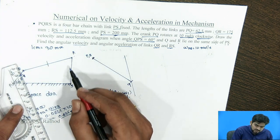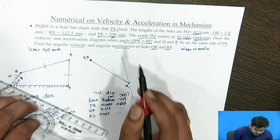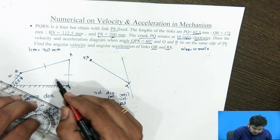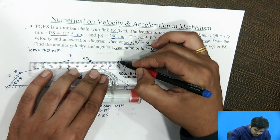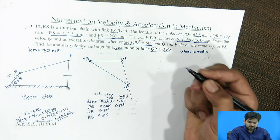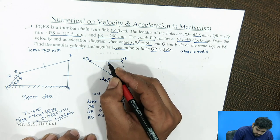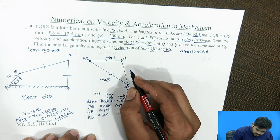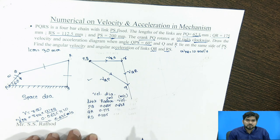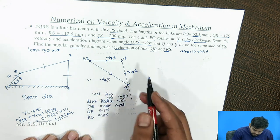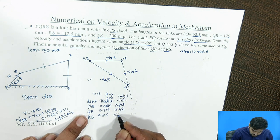The velocity of RS is perpendicular to that link. Since we don't know the R point, from the S point we draw a perpendicular line to link RS. From the S point, we draw this perpendicular line and at the intersection we get point R. This gives us: velocity of Q with respect to P, velocity of R, and velocity of Q with respect to R. From this velocity diagram, we get velocity of RS as 0.38 and velocity of QR as 0.34.